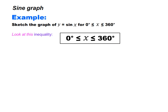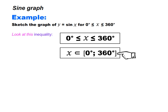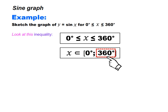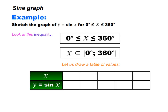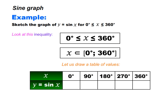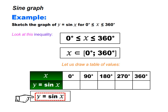This inequality can also be written like this. We start at 0 degrees and end at 360 degrees. Let us draw a table of values. We start at 0 degrees then end at 360 degrees, making our intervals 90 degrees. Let us write down the equation of our graph, which is y is equal to sin x.